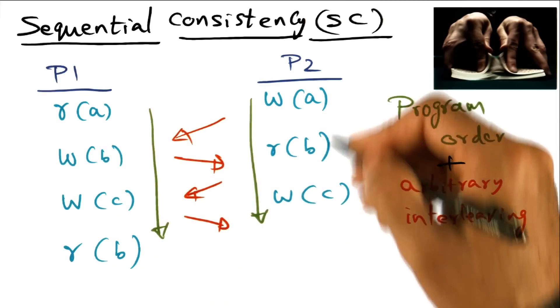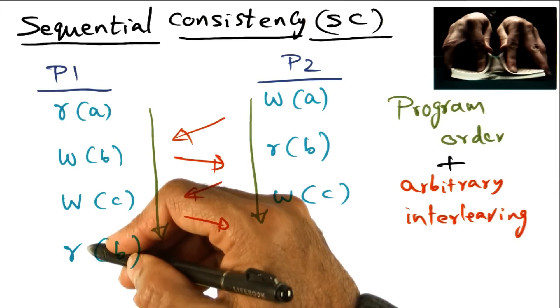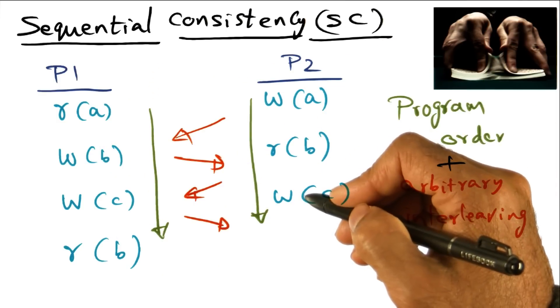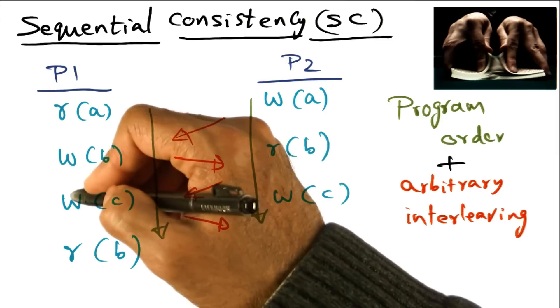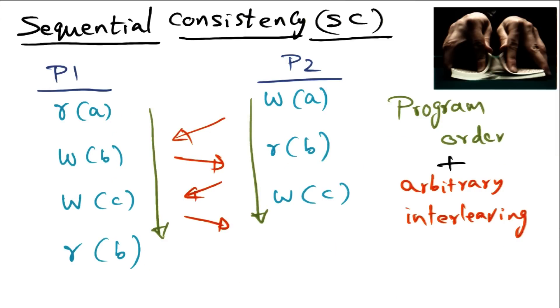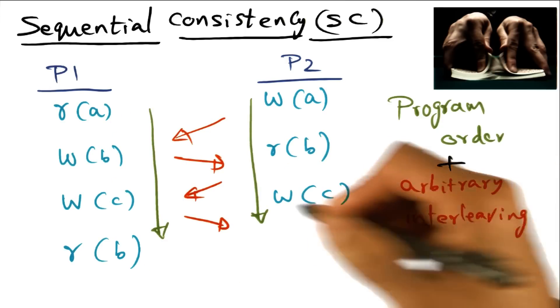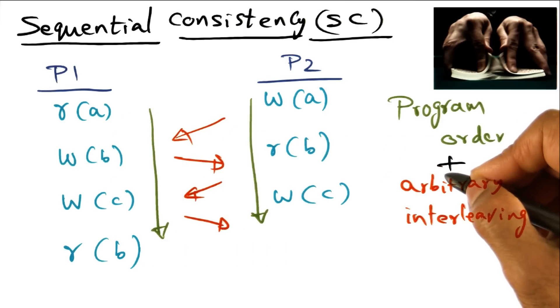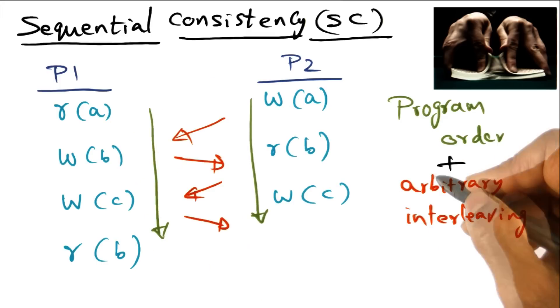If you think of these memory accesses on an individual processor as the card split, but instead of a two-way split, you have an n-way split and we are doing a merge shuffle of all the n-way splits of the memory accesses to get the sequentially consistent memory model.